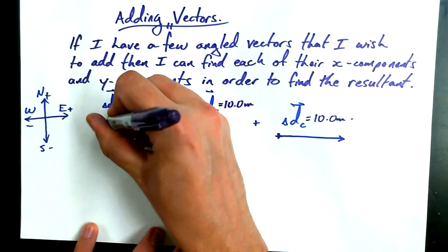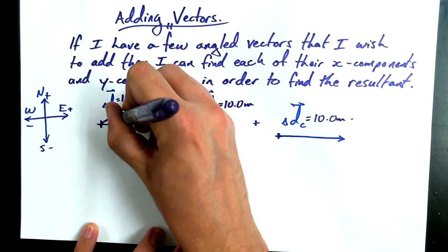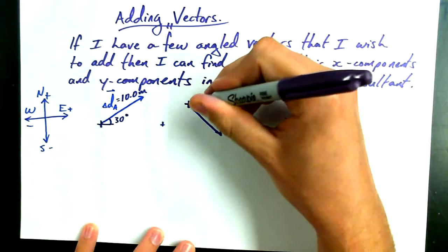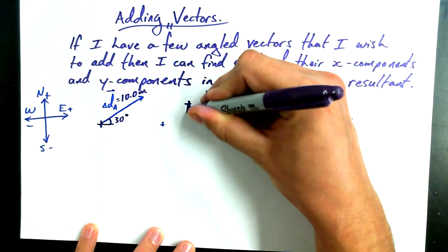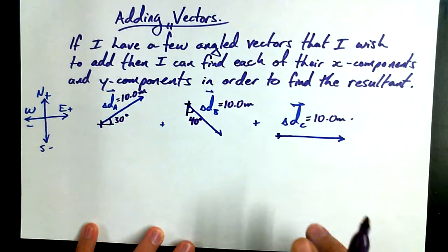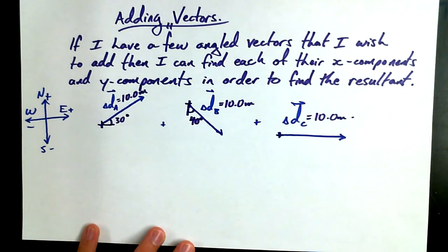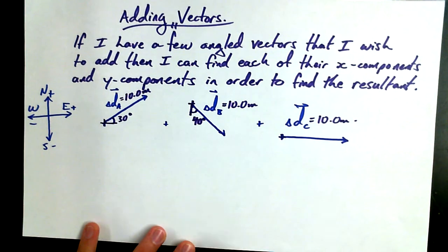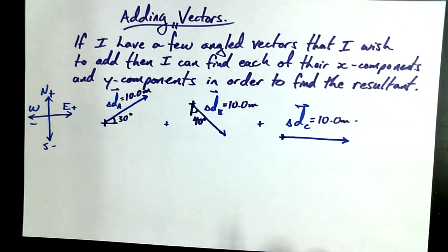So in terms of directions, 30 degrees relative to the east, so east 30 degrees north. I'd like to do this one south 40 degrees east, and this one is going to be due east. So I'm not going to add any labels on there, it's just indicated that it is going straight east. Is that 40 for B? Yeah, 40 degrees, south 40 degrees east for B.